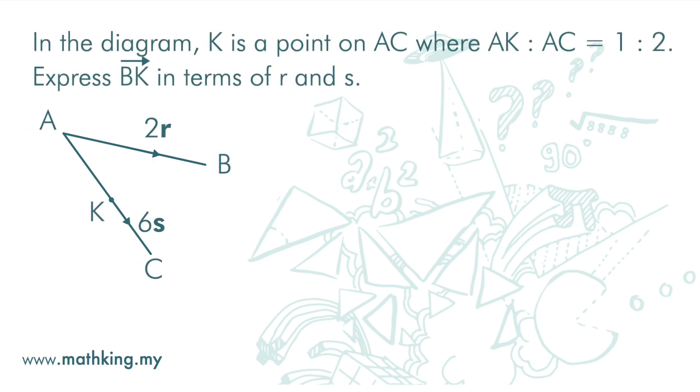In the diagram, K is a point on AC where AK to AC is 1 to 2. Express BK in terms of R and S.